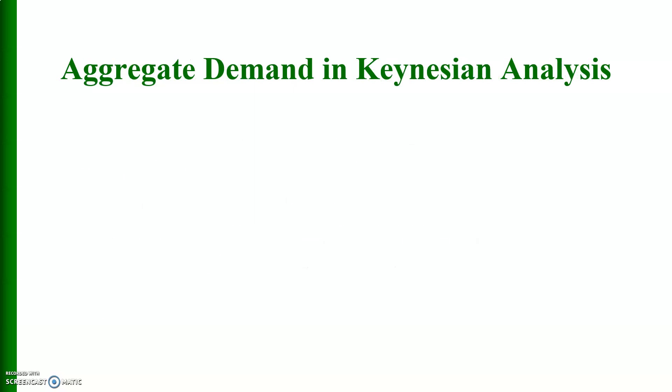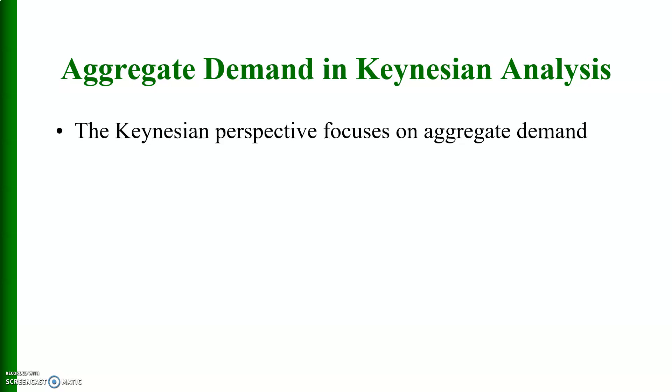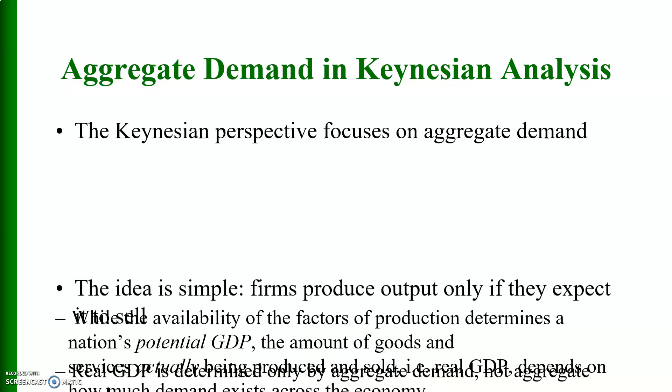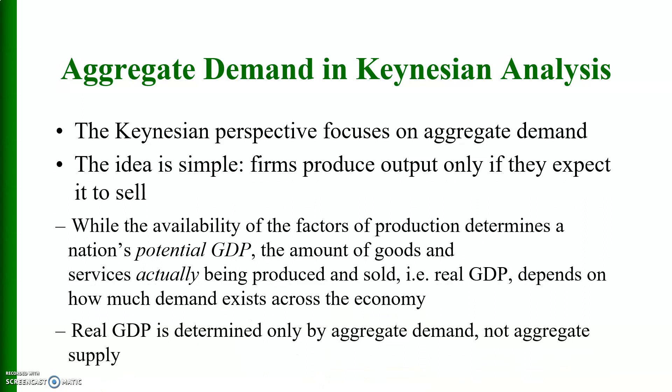Regarding aggregate demand in Keynesian analysis: the Keynesian perspective focuses on aggregate demand. The idea is very simple — firms produce output only if they expect it to sell. While the availability of factors of production determines the nation's potential GDP, the amount of goods and services actually produced and sold — that is, real GDP — depends on how much demand exists across the economy. So real GDP is determined only by aggregate demand, not aggregate supply.